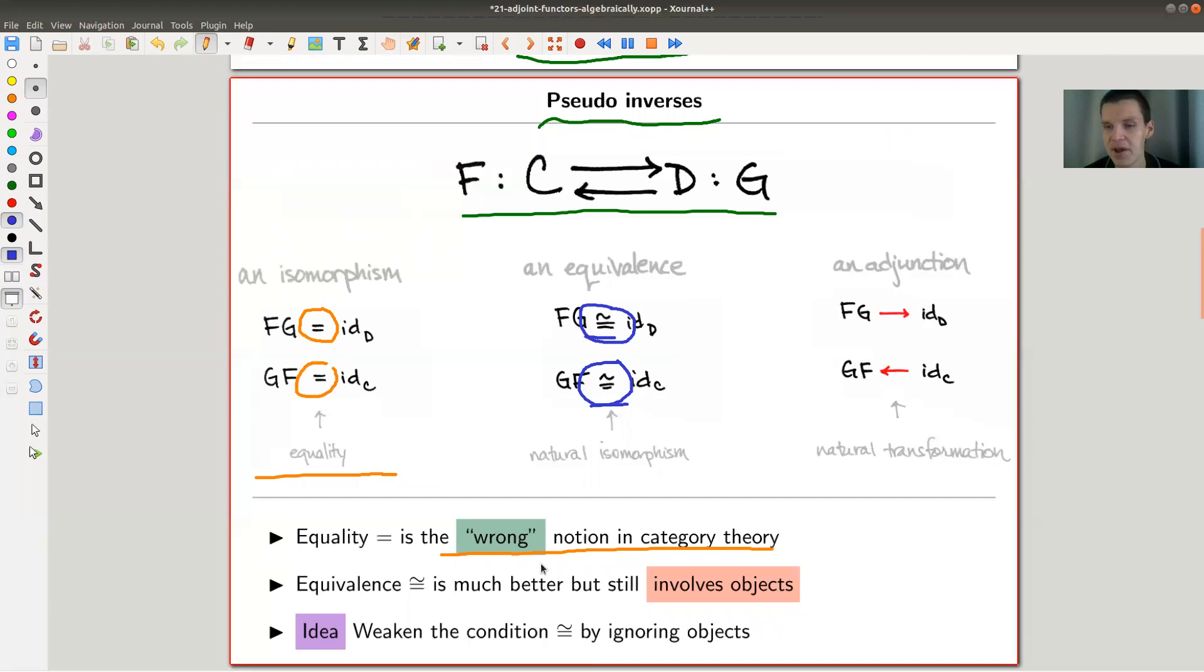Most functors between categories should be, well, most functors between categories are nothing, but most nice functors should be some kind of equivalences, and isomorphisms are really rare.